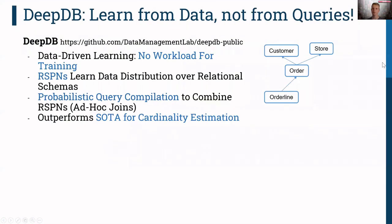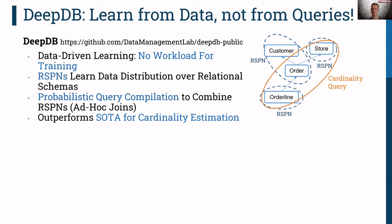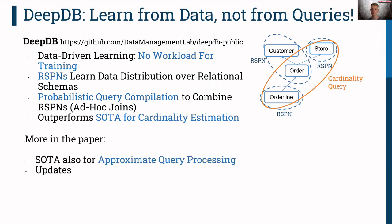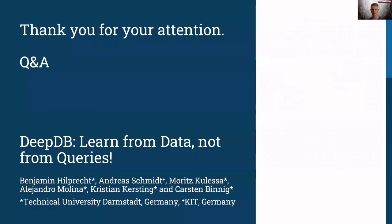To wrap it up, DeepDB proposes data-driven learning — we do not have to run a workload to gather training data. Instead, RSPNs learn the correlations in complex relational schemas, and at runtime we combine several models to handle arbitrary joins using probabilistic query compilation. We outperform both learned and classical approaches for cardinality estimation, and in the paper we also show that we outperform state-of-the-art approaches for approximate query processing while efficiently supporting updates. The code is open source, so please feel free to experiment with it. Arigato — I'm now ready to take questions.